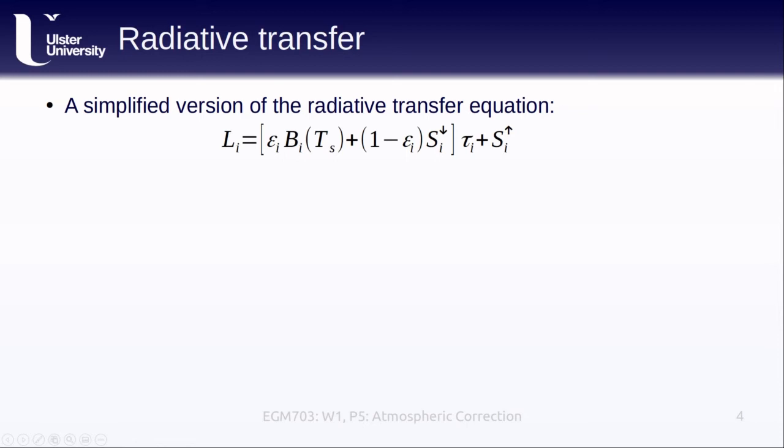Here, the radiance L measured at the top of the atmosphere, at a given wavelength or channel, is equal to the emissivity multiplied by the black body radiance for a given surface temperature, T sub s. This is what's actually emitted by the surface.